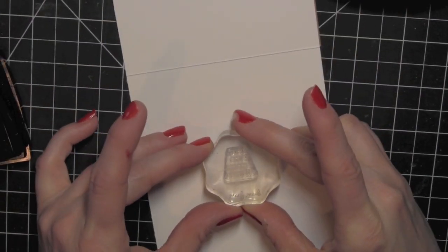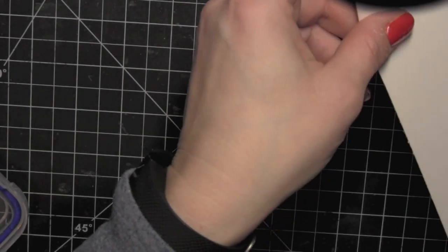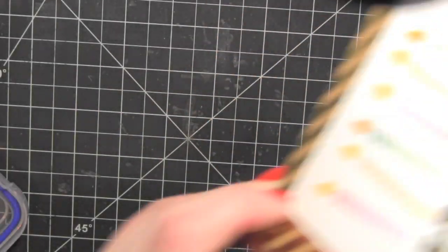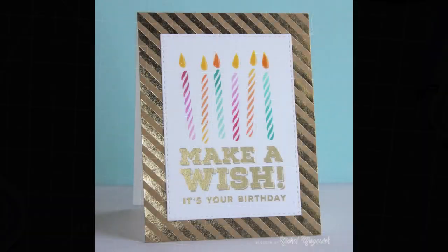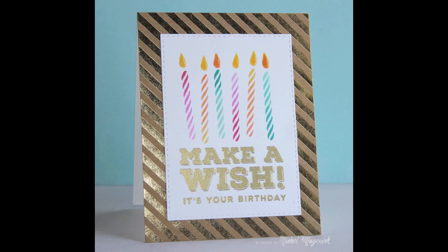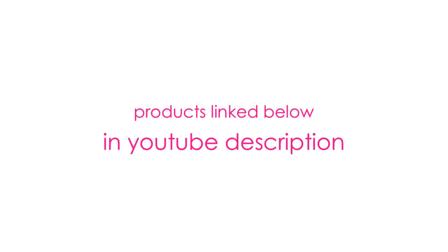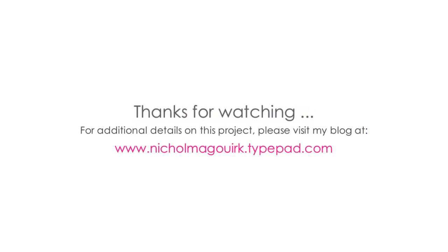So when the glossy accents was dried I stamped another greeting from that same stamp set and then heat embossed it with the gold embossing powder. I hope you've enjoyed this video showcasing the April 2015 Simon Says Stamp card kit. The supplies I've used are listed below the video here on YouTube. Thanks for watching and we'll catch you next time.